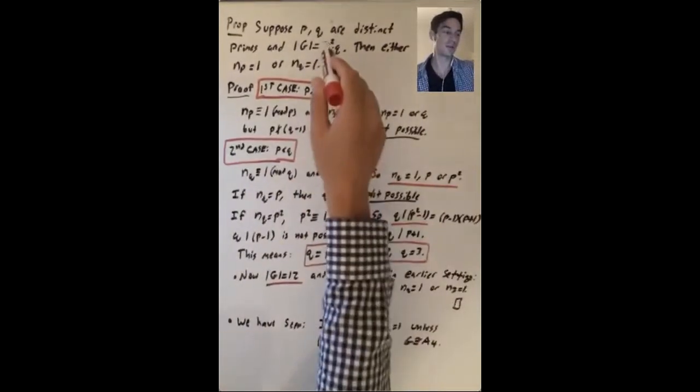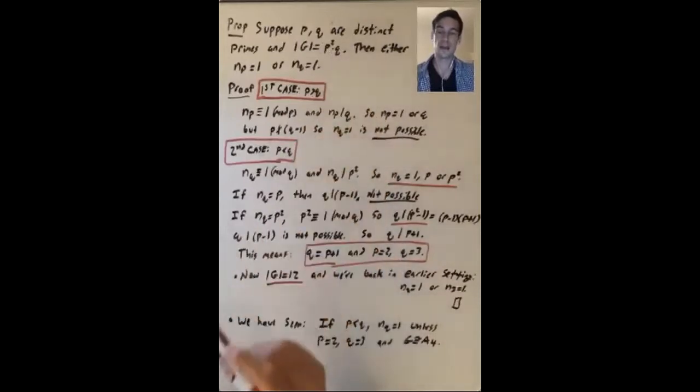And also, if p equals 3 and q equals 5, then we're talking about groups of order 45, which we have already talked about quite a bit. So let's prove this in two cases, depending on the relative size of p and q.